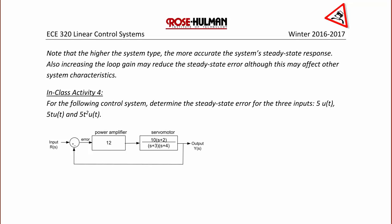Note that the higher the system type, the more accurate the system's steady-state response. Also, increasing the loop gain may reduce the steady-state error, although this may affect other system characteristics as well.